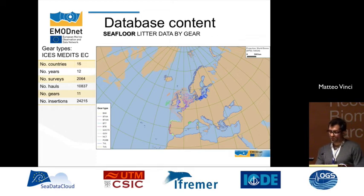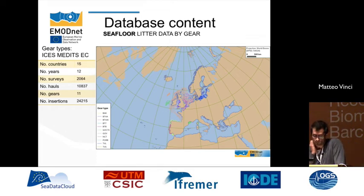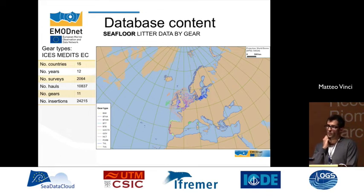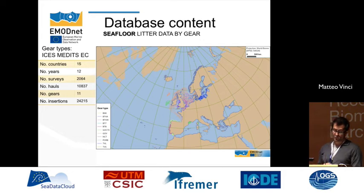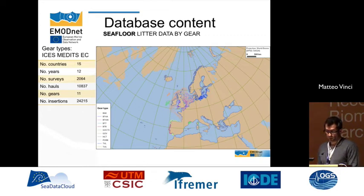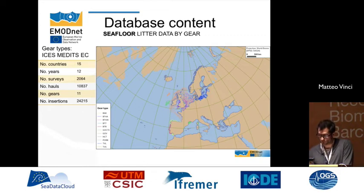Here is another map for sea floor litter data, where the color legend shows the different types of gears used in trawling surveys. There are data from 15 countries over 12 years, more than 2,000 surveys, more than 10,000 hauls, 11 different gears used, and more than 24,000 insertions of litter items.